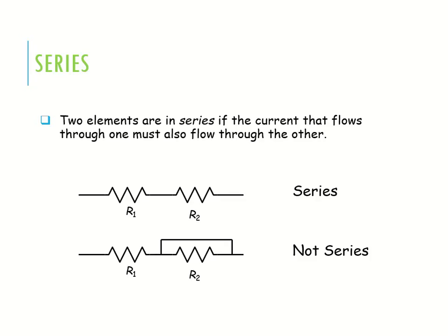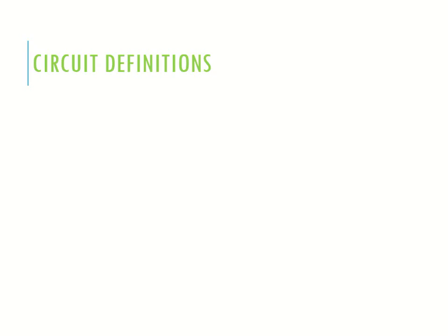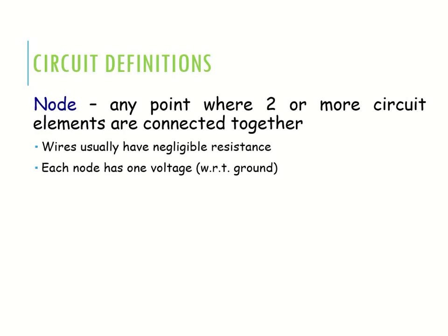For a series combination of resistors, you can find the equivalent resistance by adding R1 plus R2. For a parallel combination, you can find the equivalent resistance using 1/R_eq = 1/R1 + 1/R2.